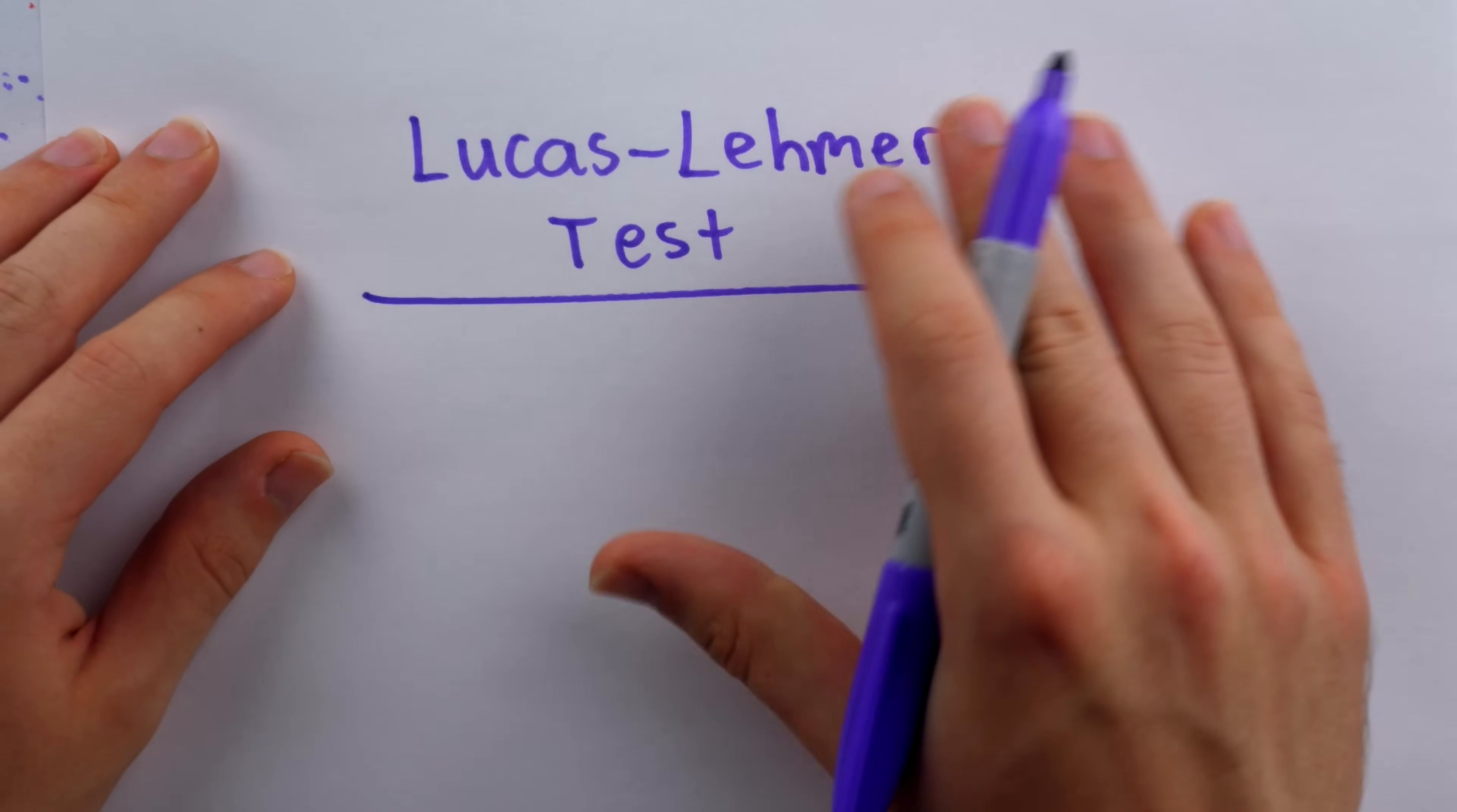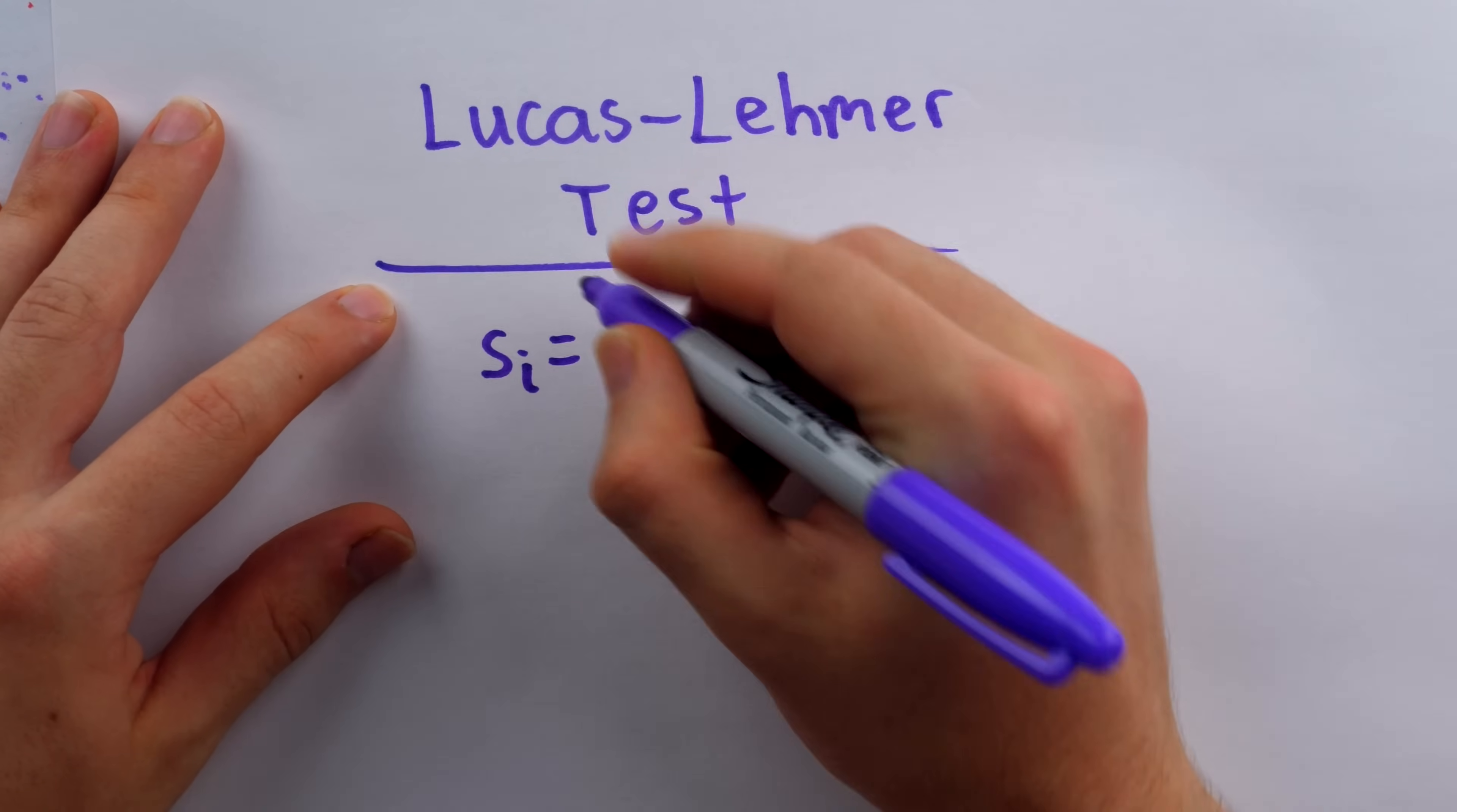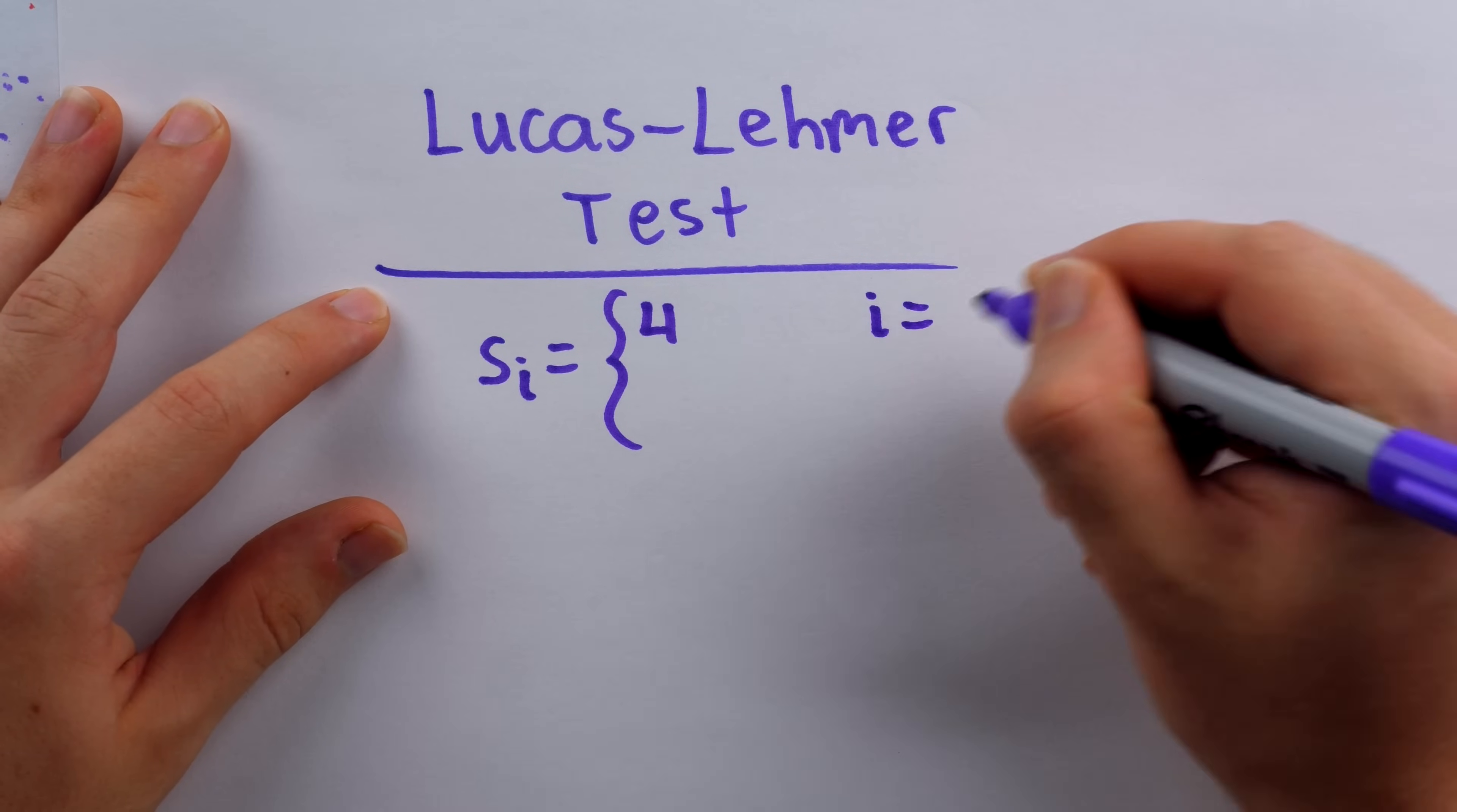Now this test works. It's based on a sequence. The sequence is defined like this. S_i, we'll call it. And the first term of this sequence, when i equals zero, we'll say, is equal to four.